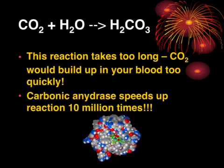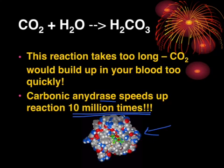Except without enzymes, this reaction — the combining of carbon dioxide and water into carbonic acid — would take way too long. That would mean a buildup of carbon dioxide in your cells; it wouldn't be able to get into your blood, and you would die. So there's an enzyme called carbonic anhydrase — there's that '-ase' ending — and it speeds up the reaction 10 million times faster than it would occur without it. This is a visual of what the enzyme carbonic anhydrase looks like. We'll talk in the second video about how it actually works.